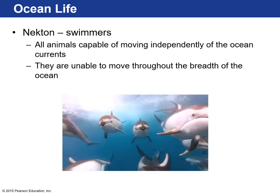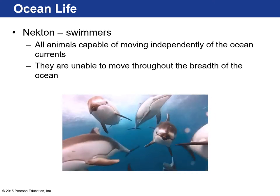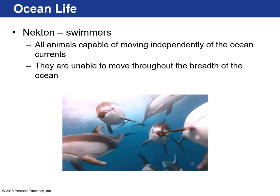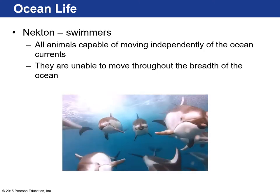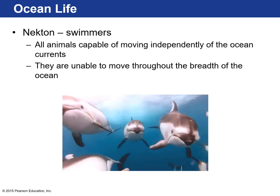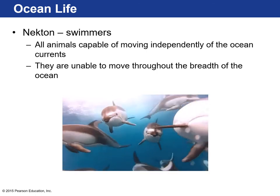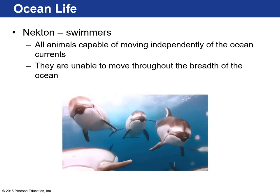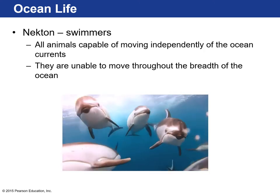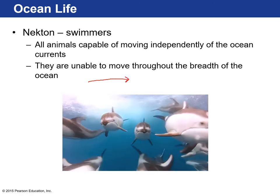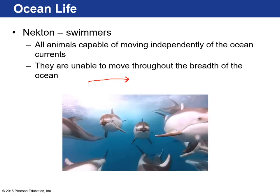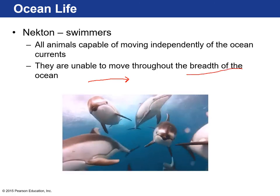Nekton are marine organisms that can swim actively — they're capable of moving independently of ocean currents. Unlike plankton that just go with the flow, nekton can choose where they want to go to feed or reproduce. However, they're unable to move through the full breadth of the ocean — top to bottom and across huge ocean basins — though some make very long migrations.